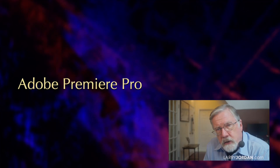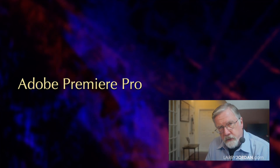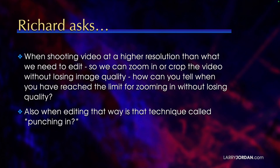Let's take a look now at Adobe Premiere Pro, where Richard asks: when shooting video at a higher resolution than what we need to edit, so we can zoom in or crop the video without losing image quality, how can you tell when you've reached the limit for zooming in without losing quality? Also, when you're editing that way, is that technique called punching in?